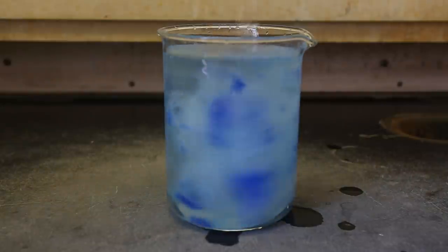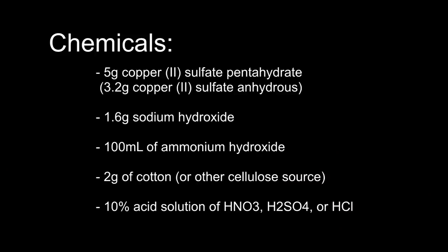For this experiment, you'll need 5 grams of copper-2-sulfate pentahydrate, or 3.2 grams of anhydrous copper-2-sulfate. You will also need 1.6 grams of sodium hydroxide, and about 100 milliliters of ammonium hydroxide. About 2 grams of cotton is required, or you can use another source of cellulose, such as toilet paper. A 10% acid solution of nitric acid, sulfuric acid, or hydrochloric acid is required, but the experiment seems to work best with sulfuric acid.